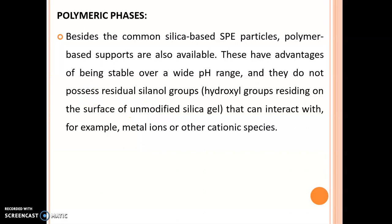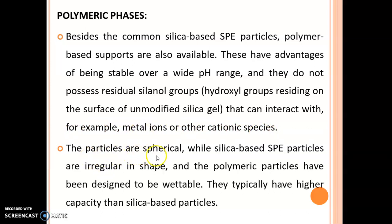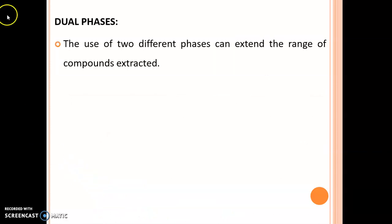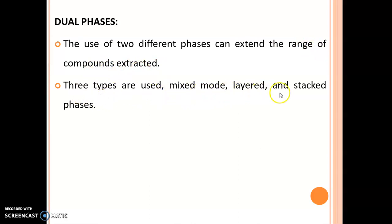Let us see some phases involved in the solid phase extraction method. First is polymeric phases. Besides common silica-based SPE particles, polymer-based supports are also available. These have the advantage of being stable over a wide pH range and do not possess residual silanol groups — hydroxyl groups residing on the surface of unmodified silica gel — that can interact with metal ions or other cationic species. The particles are spherical, while silica-based SPE particles are irregular in shape. Polymeric particles have been designed to be wettable and typically have higher capacity than silica-based particles. The second phase is dual phases, in which the use of two different phases can extend the range of compounds which can be extracted. Three types are used: mixed mode, layered mode, and stacked phases.